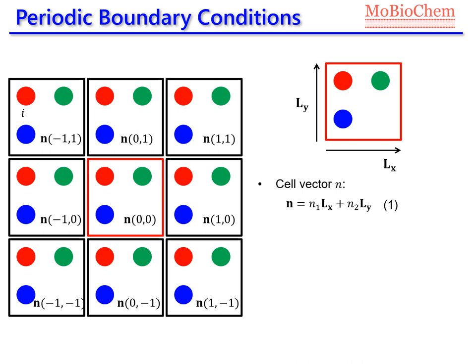With these cell vectors, we can always define the position of every atom of our system with respect to the position of the atoms in our primary cell. Let's focus now on atom I in the primary cell and on the same atom in the replica cell. The position of the atom in this replica cell is equal to the position of the same atom in the primary cell minus 1·Lx plus 1·Ly. With this (-1, +1), we are defining the position of this atom with respect to the position of the atom in the primary cell.